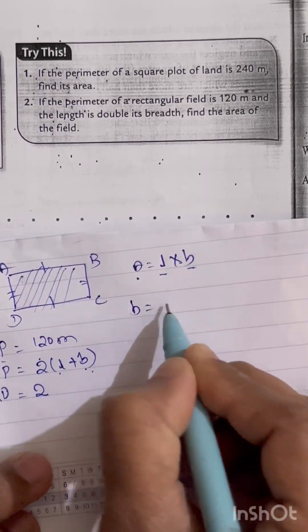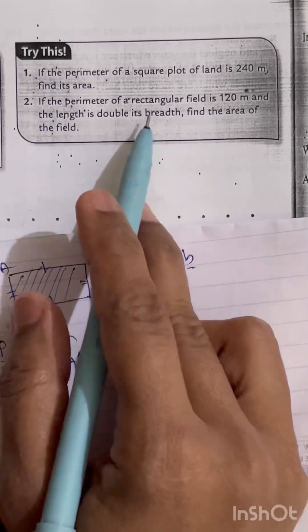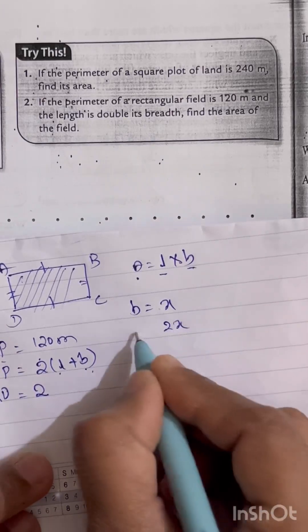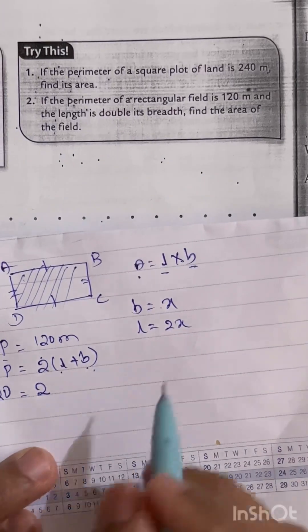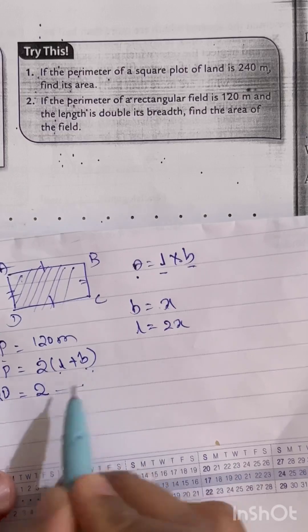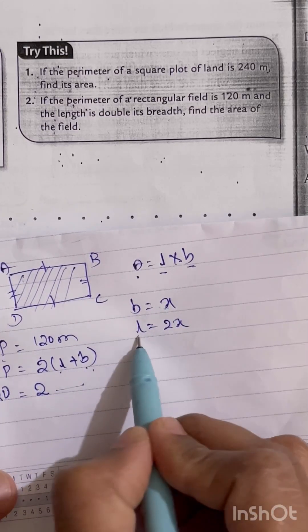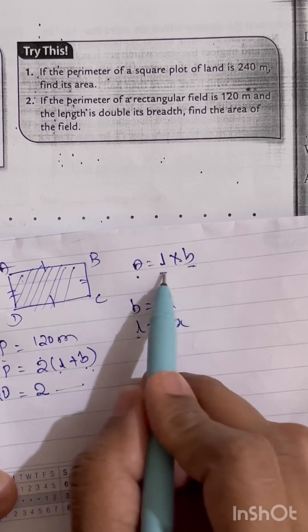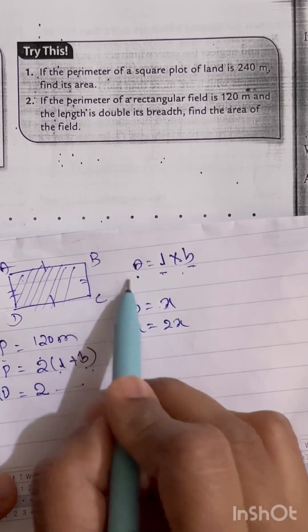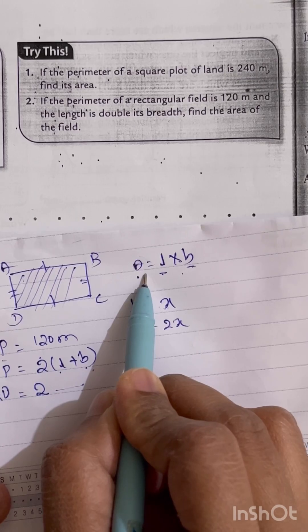So let it be X. Breadth will be X, and double of its breadth will be 2X. That will be L equals 2X. Now this value only we have to substitute. First we have to find out the X value, then after that we can find out the length value. Then we will substitute that length and breadth value in the area formula, and then we can find out the area value.